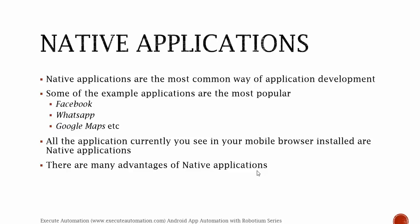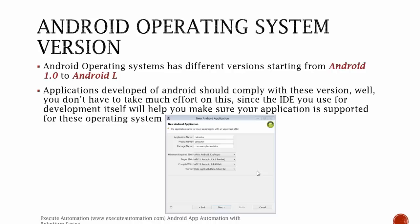The Android operating system has different versions starting from Android 1.0 up to Android L, with the next version possibly being Android M. Each version also has different API levels, which we'll discuss later in this video series. Applications developed for Android should be compatible with these versions.